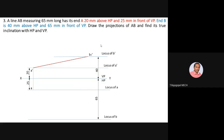To make A-dash B1-dash parallel to XY, extend the projector from locus of B-dash down to locus of A. From point B1 extend the projector correspondingly to get B1 in the top view. Then, with A as center and the B1 distance as radius, draw an arc to cut locus of B. Join A and B to complete the top view.